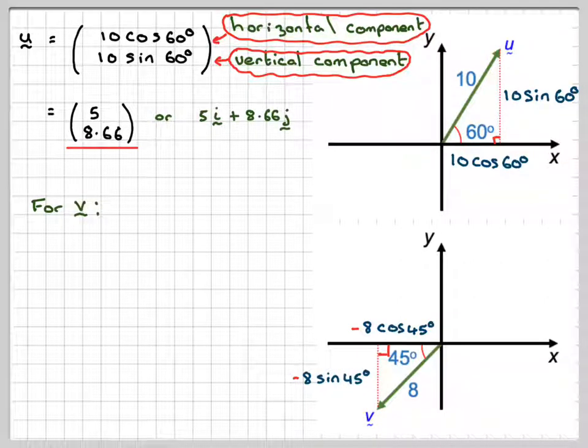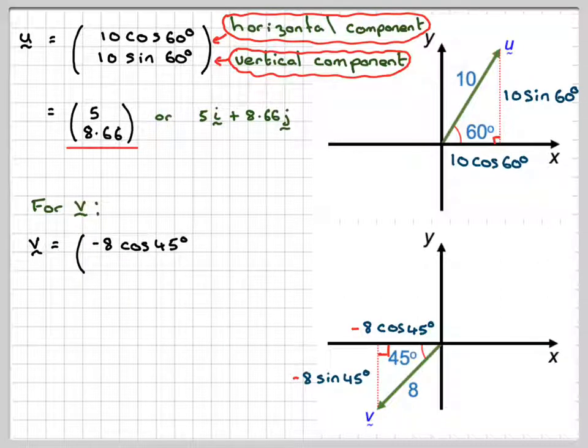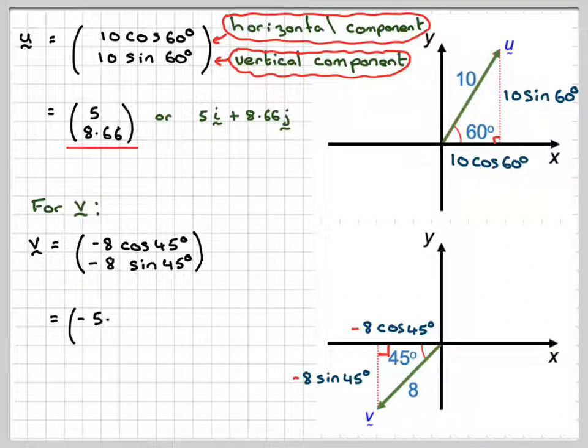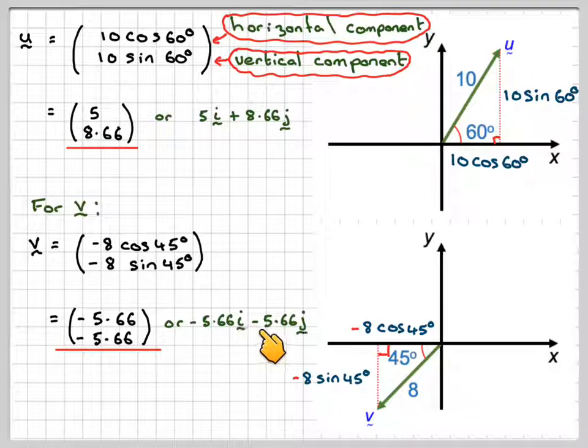So don't forget the minus sign here. So writing out v, that will be minus 8 cos 45, horizontal component first, vertical component minus 8 sine 45. Working those out on a calculator and give them to three significant figures, we're going to get minus 5.66 over minus 5.66. Again, writing it in this format, that will be minus 5.66i minus 5.66j.